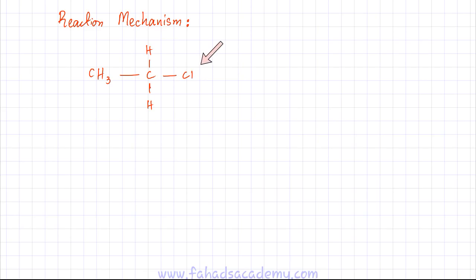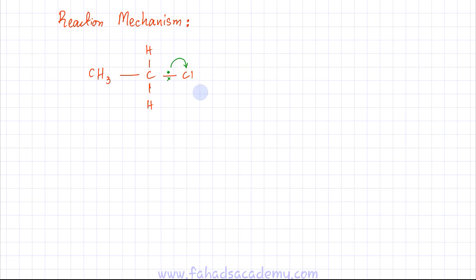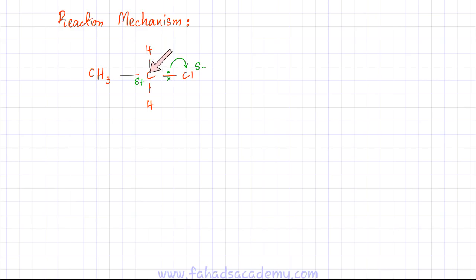When you have a Cl atom attached, it is extremely electronegative. So the Cl atom causes the shared pair of electrons to lie closer to Cl. If these shared pair of electrons are lying closer to Cl, then Cl has a slight negative charge. This bond has some polarity and a permanent dipole is formed — the electrons are closer to Cl, Cl has a slight negative charge, and carbon has a slight positive charge.